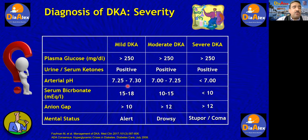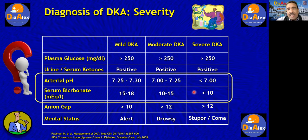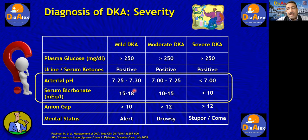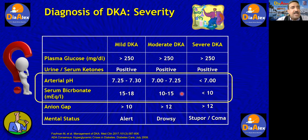The severity of DKA is not dependent on the blood glucose level or the degree of ketonemia, but on the degree of metabolic acidosis. Look at the bicarb: if it's in the range of 15 to 18, you can manage the patient in the emergency department. If bicarb is less than 15, the patient needs to be managed in the intensive care unit.